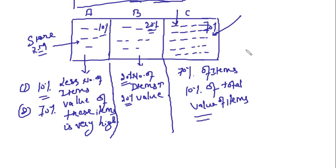So the meaning of ABC analysis is: divide your store into three parts — A, B, and C. We have three types of items: very high-value items, moderately valued items, and very low-value items. High-value items will be fewer in quantity; moderately valued items will be moderate in quantity; and very low-cost, low-value items will be highest in quantity in our store. A is high-value items, B is moderately valued items, and C is low-value items.